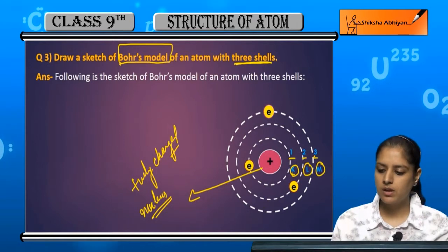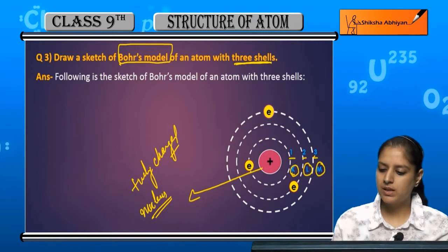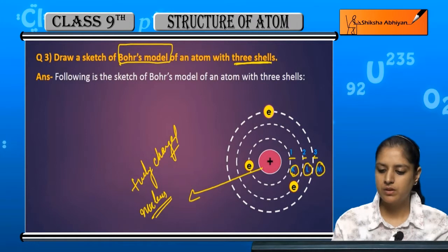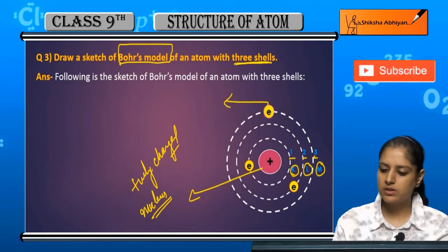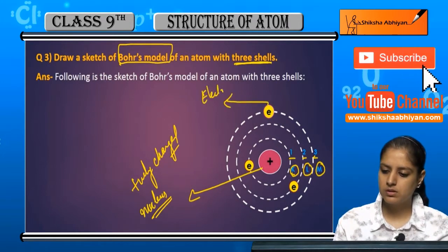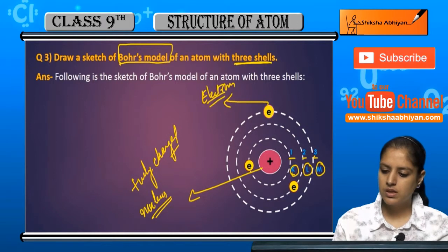Ab un shells ke andar humne electrons ko define. So yeh hai electrons, thik hai, aur yeh hai energy shell, energy level, ya phir shell, thik hai.